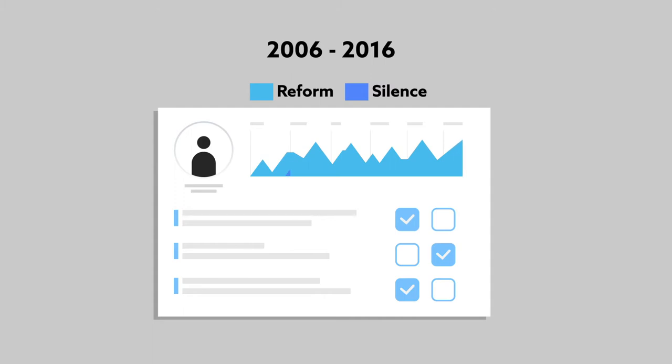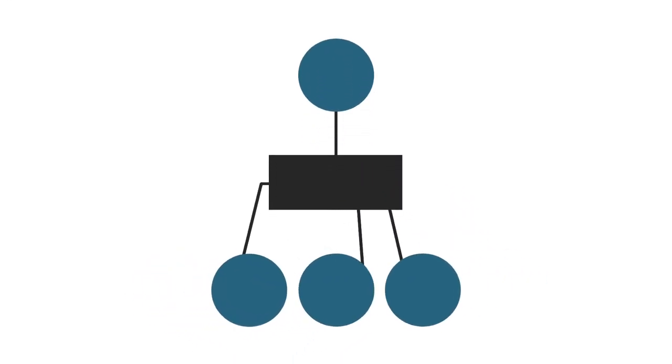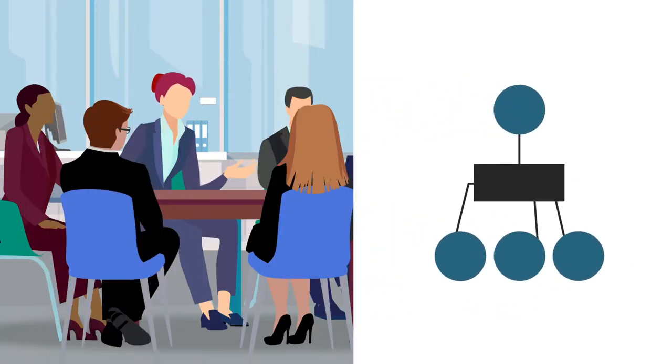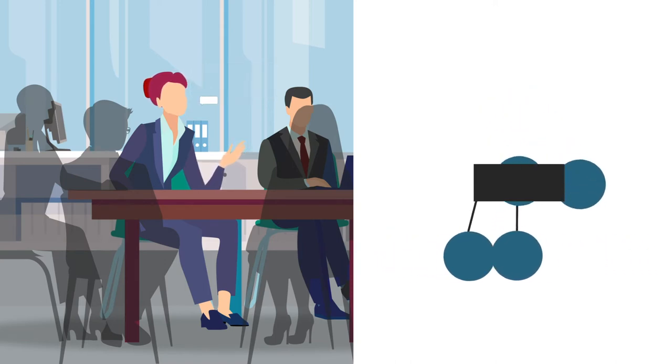The team's results presented a visible correlation. More reforms generally led to employees being more silent. The findings suggest that repeated structural reforms breed uncertainty and the perception of threat among employees at all organizational levels. In turn, employees become increasingly silent, behavior that tends to be reinforced by repetitive reform.